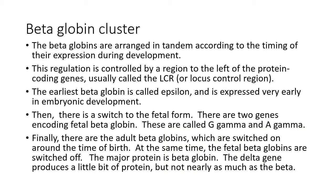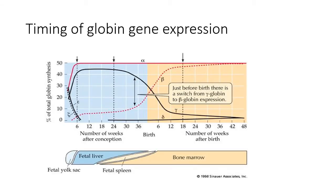This locus control region basically controls the sequence of expression at different times during development. In terms of timing, the embryonic forms are expressed very early, turning off by six weeks after conception, at which time the adult alpha forms come on and remain throughout life. For the betas, there is a switch to the fetal form during fetal development, which is switched off around the time of birth, when the adult beta globins are turned on.